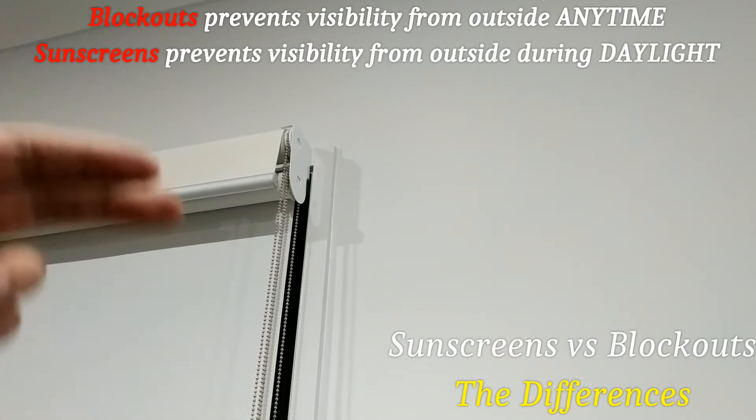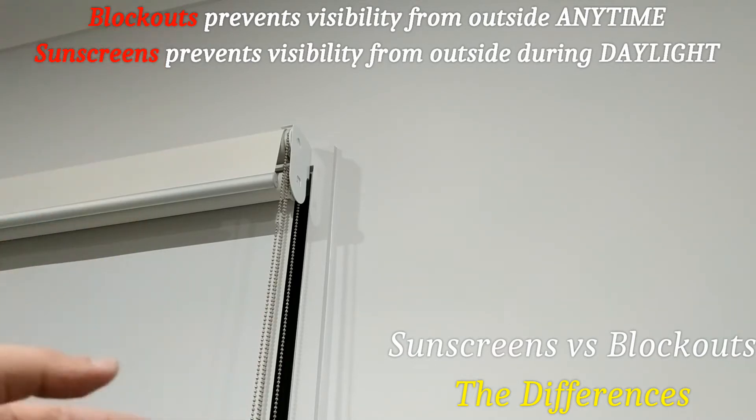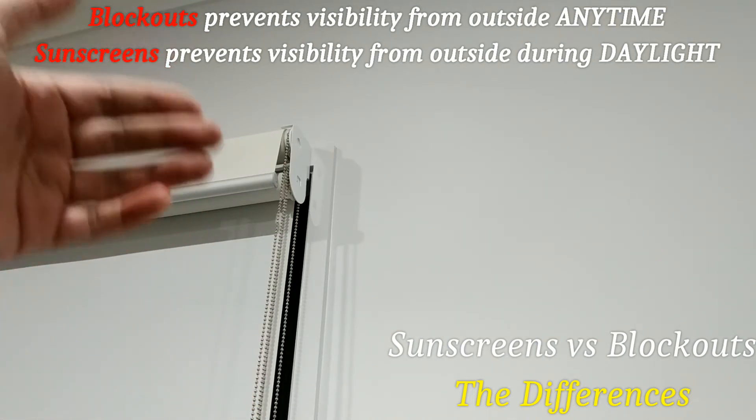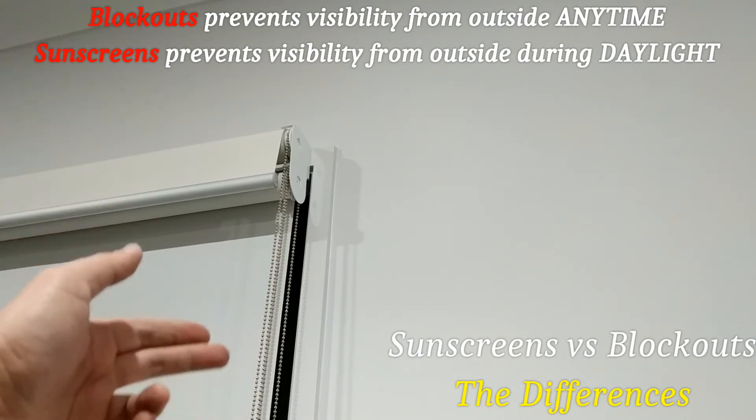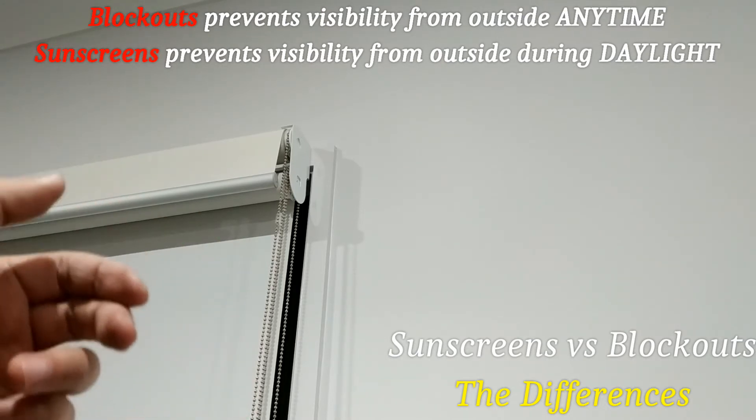But the other reason is that when it's nighttime, you'll have the lights on inside, for example, if you're still awake. If you have the lights on inside and you only have a sunscreen, then people can see from the outside inside because it's brighter inside than outside.